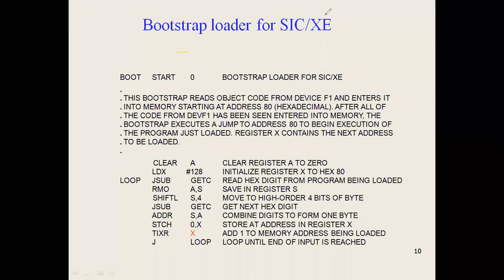One more thing to remember: in the object program, at a particular location — say location 1000 — you might have '1a'. At location 1000 you have '1', and at location 1001 you have 'a'. Each character is one hex digit, so two characters together are 4 plus 4 bits, which is 8 bits, which is one byte. So at one memory location we fit two characters together to form one byte of data.